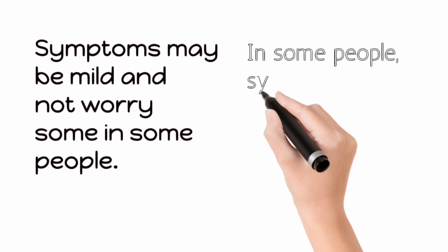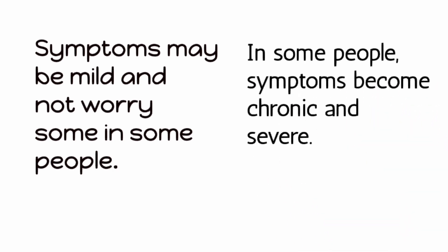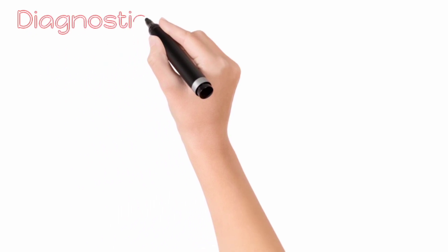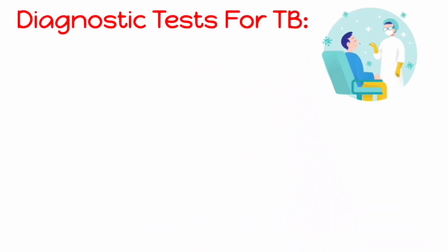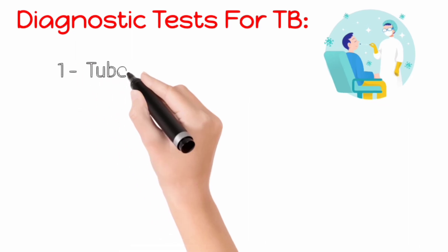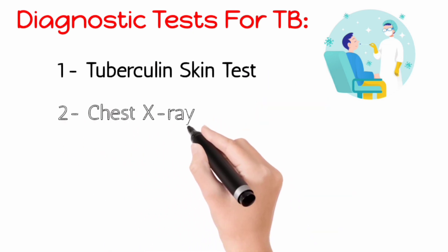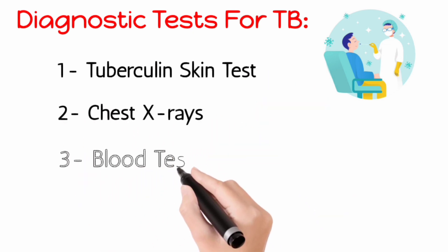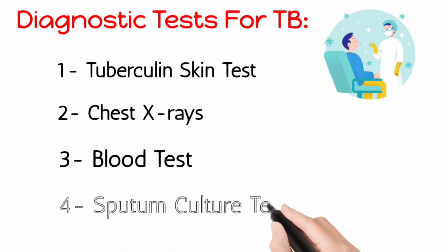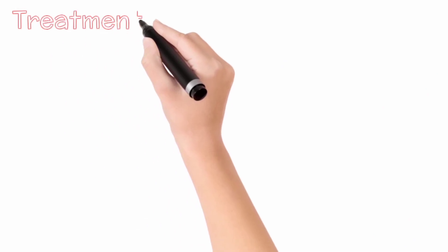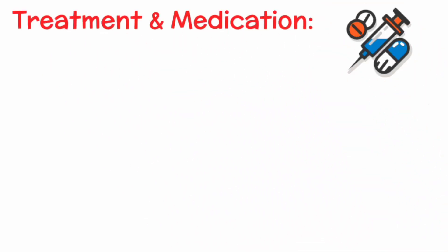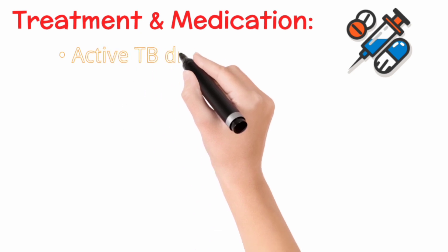The lab tests that lead to the diagnosis of tuberculosis include: number one, the tuberculin skin test; number two, chest x-rays; number three, blood test; and number four, sputum culture test.